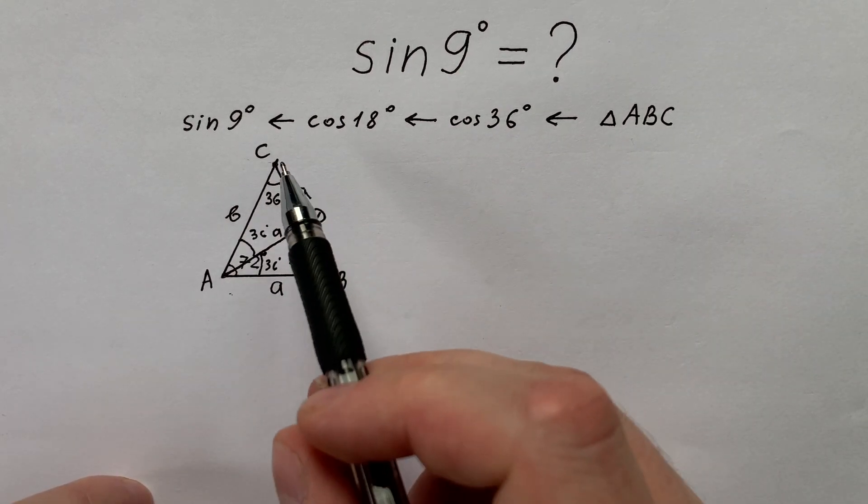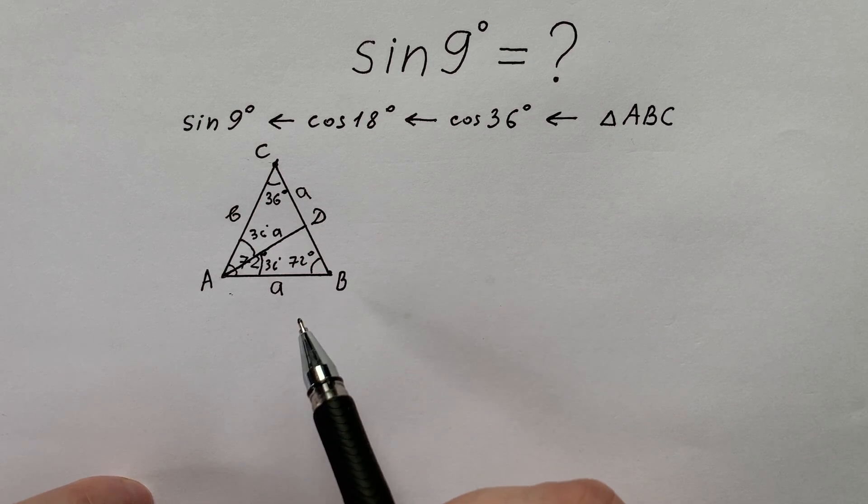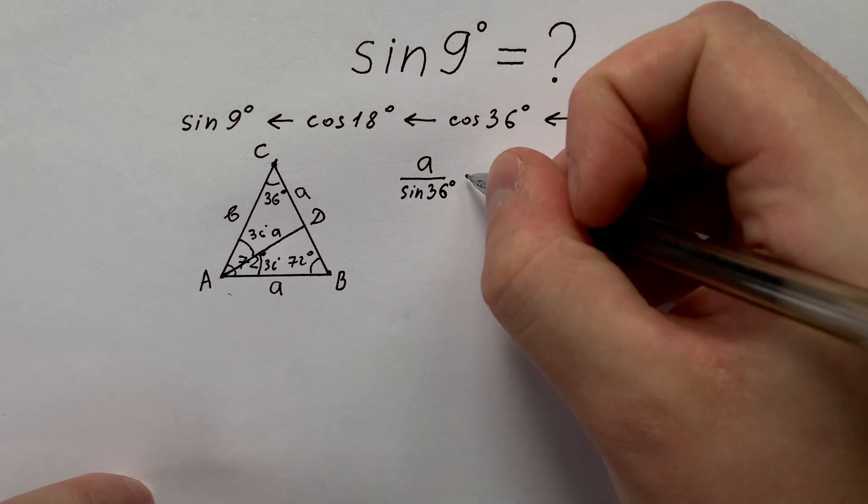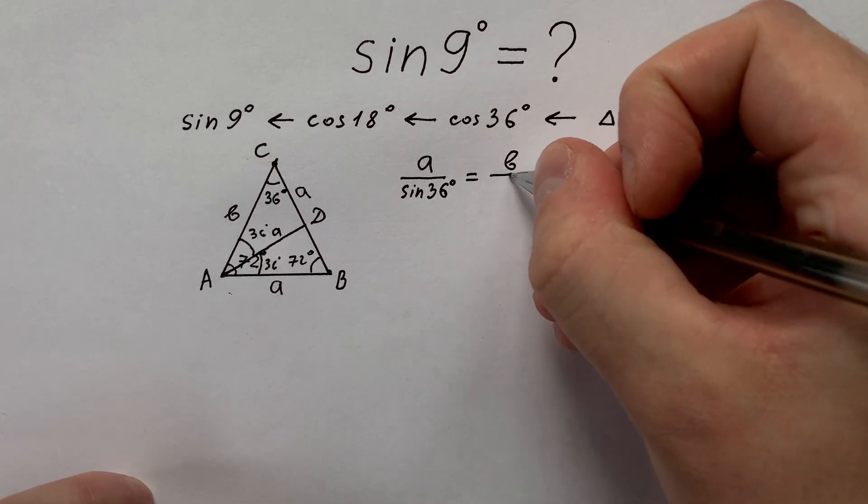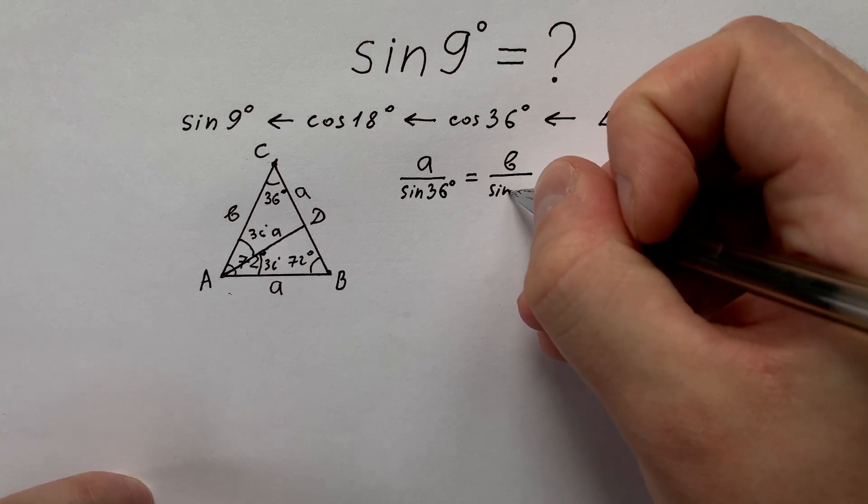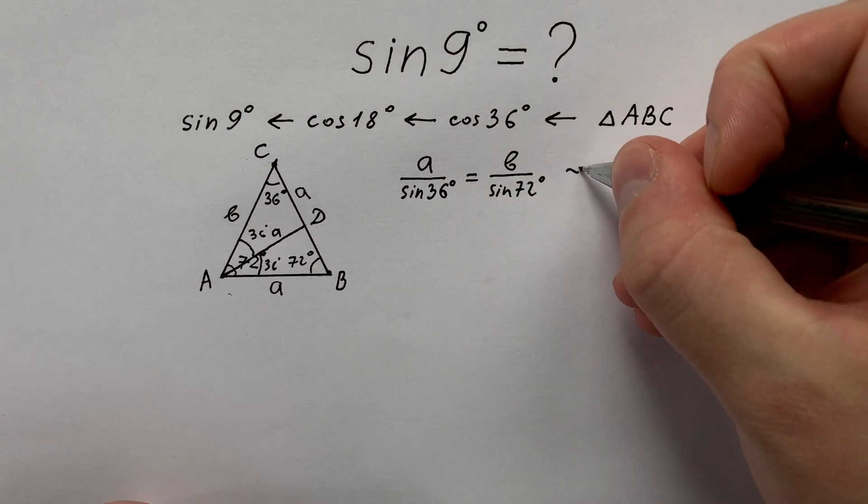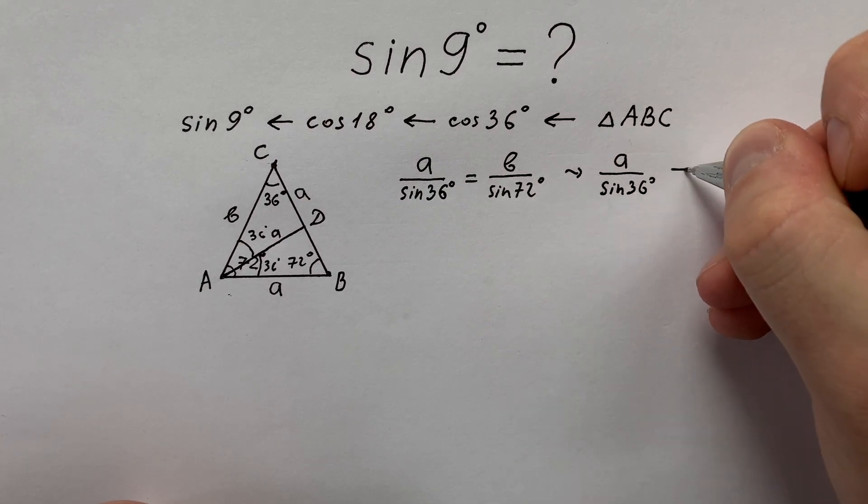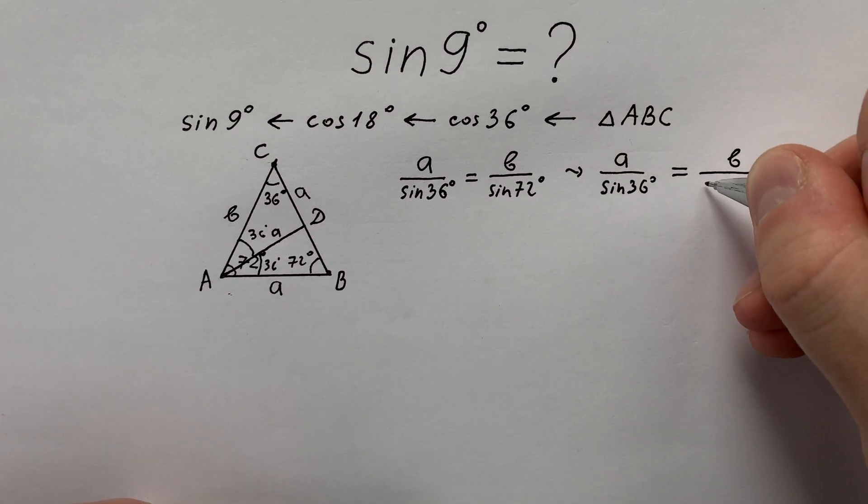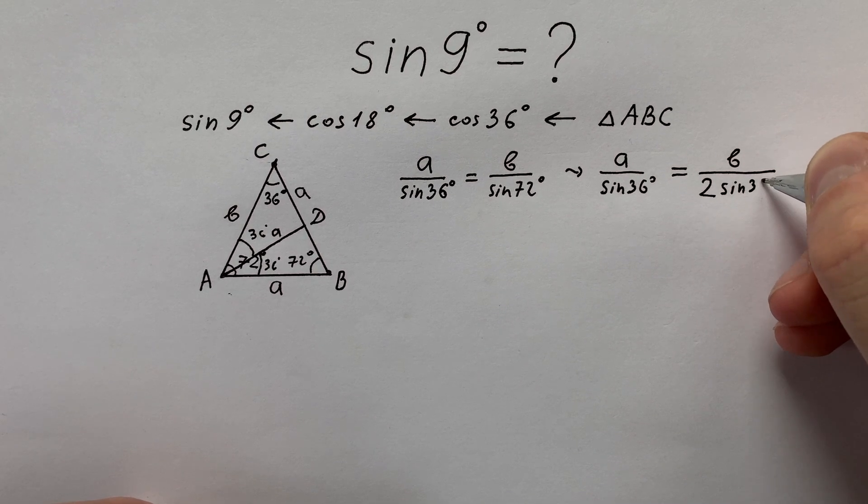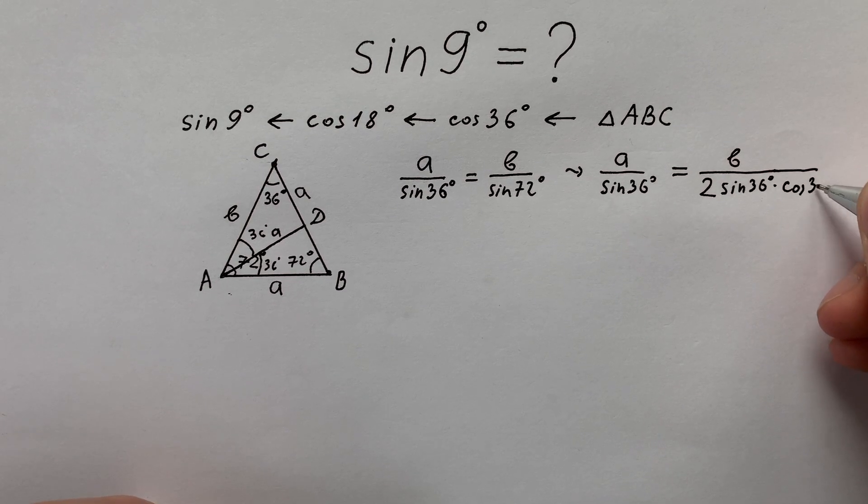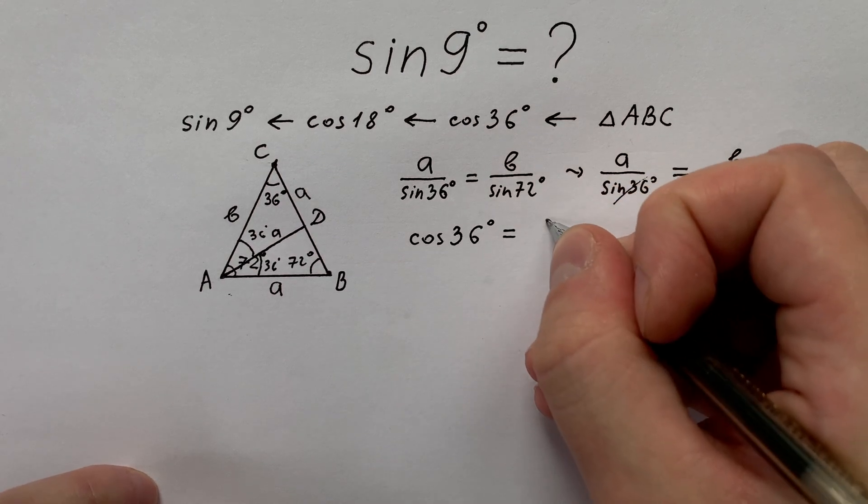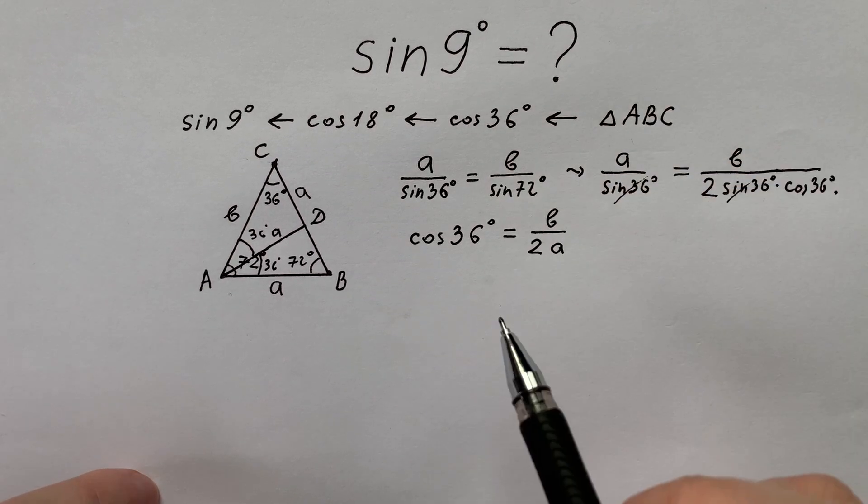From triangle ABC let's write law of sines. It looks like a divided by sine 36 degrees equals to b divided by sine 72 degrees. Or we can write it like a divided by sine 36 degrees equals to b divided by 2 times sine 36 degrees times cosine 36 degrees. We understand that cosine 36 degrees equals to b divided by 2a. It's simple.